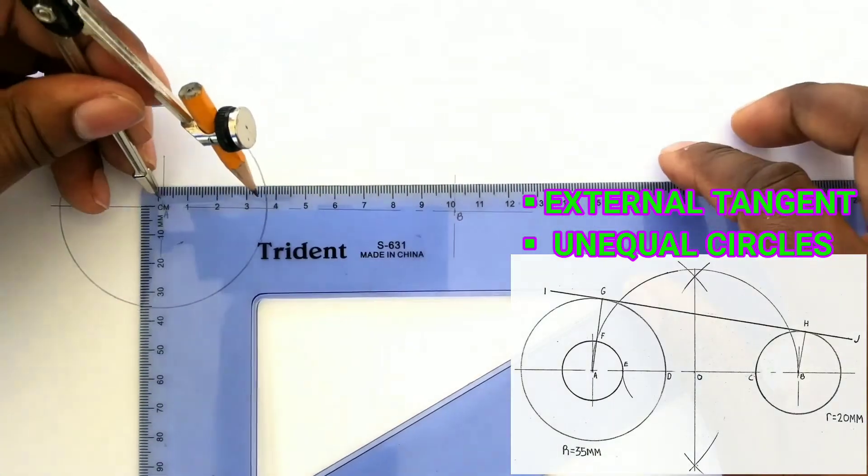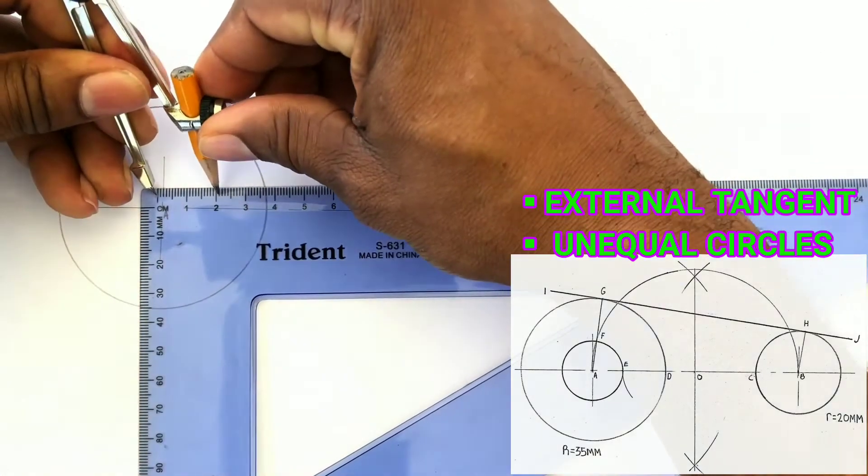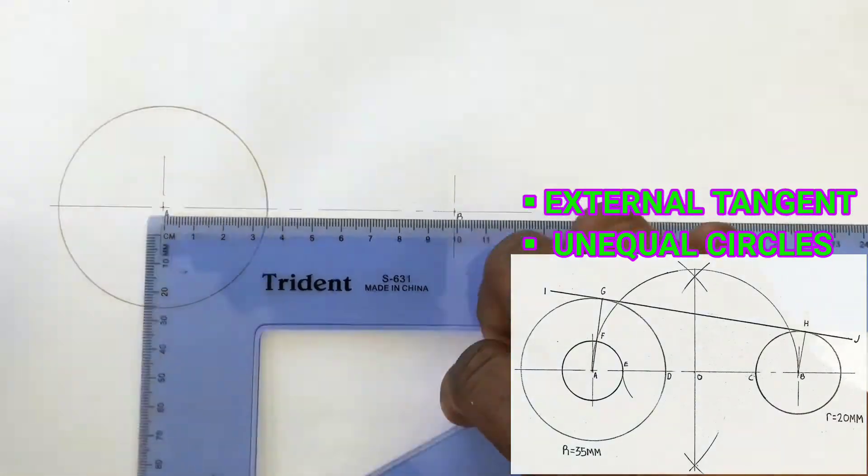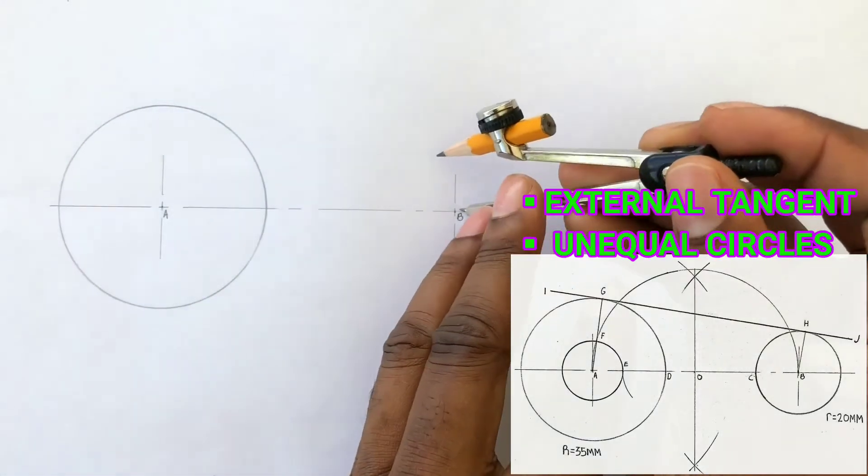For the second smaller circle we will open our compass to a radius of 20 millimeters and using B as center we will draw a circle.